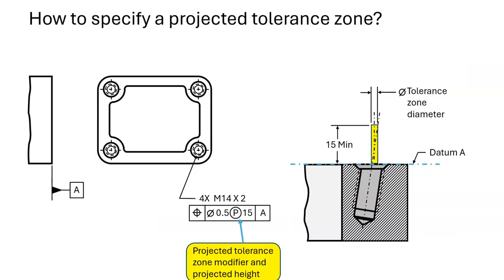The projected tolerance zone is specified using the projected tolerance zone modifier as shown in the feature control frame. The number following the projected tolerance zone modifier indicates how far above the surface of the part the tolerance zone must project.